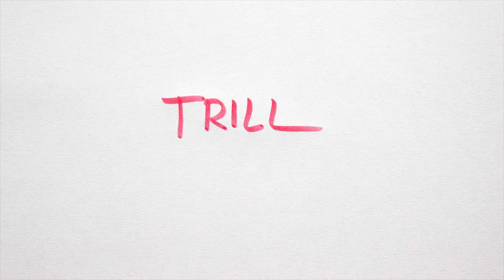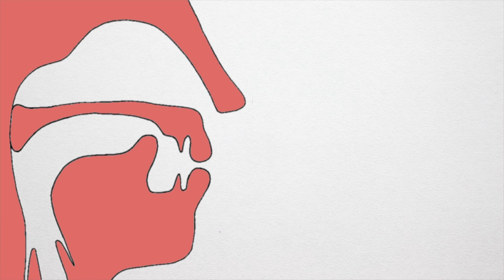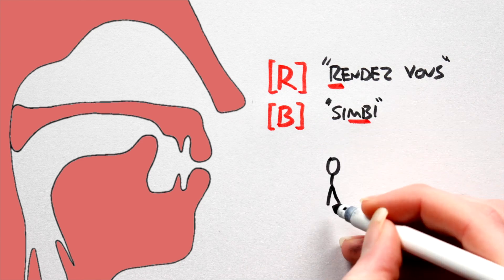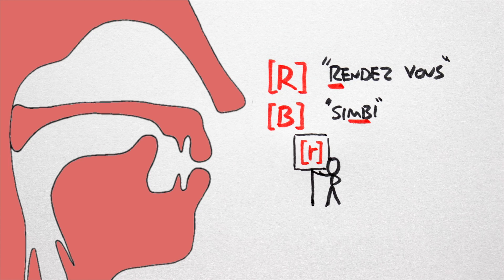Number 6: Trill. Here an articulator is held in place, and the air blown through the vocal tract causes it to vibrate back and forth. The IPA has three contrastive trills: 'ra' as in the French 'rendezvous', a bilabial trill as in the Nias word for lower jaw 'si bruit', and of course the rolled R, which a stick figure friend will again demonstrate.